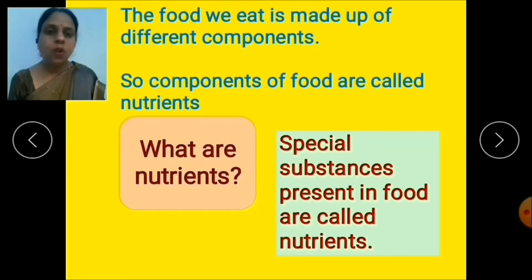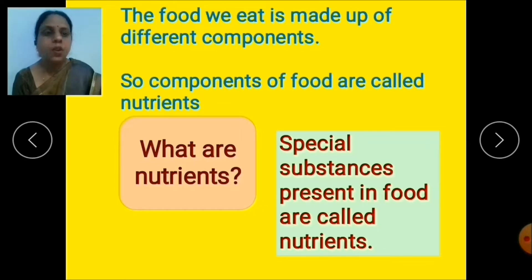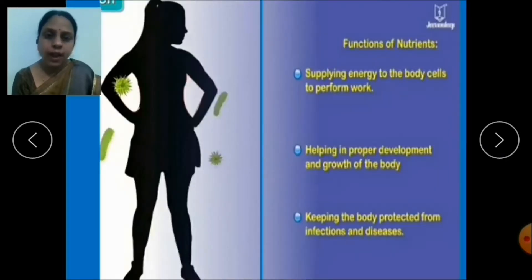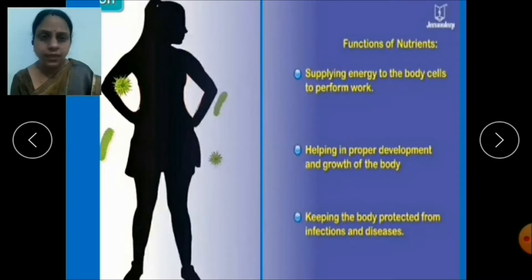We eat varieties of food, and the food which we eat consists of different components. These components of food are called nutrients — special substances present in the food. These nutrients play a very important role in our body. They supply us energy, help us grow, and protect us from various diseases and infections. Nutrients supply energy to body cells to perform work, help in proper development and growth of the body, and keep the body protected from infections and diseases.